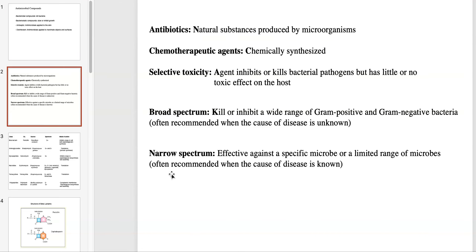Antibiotics are natural substances produced by microorganisms. For example, the Penicillium mold produces penicillin, and that's an antibiotic. Chemotherapeutic agents, conversely, are chemically synthesized — usually compounds based off of the molecular structure of an actual antibiotic, but they're not natural; they're synthesized in the lab.